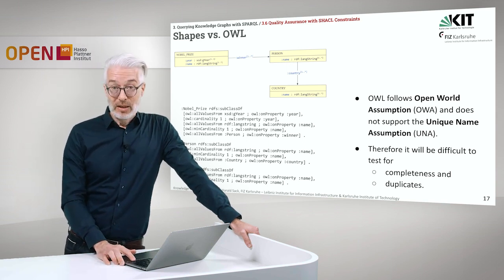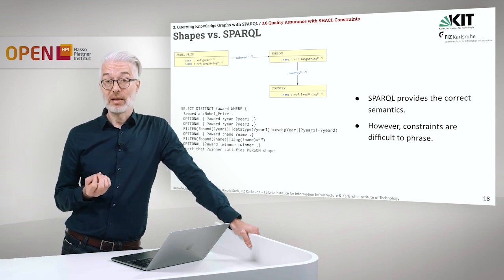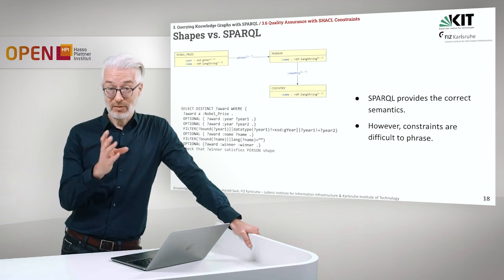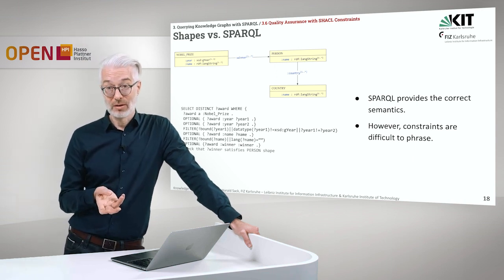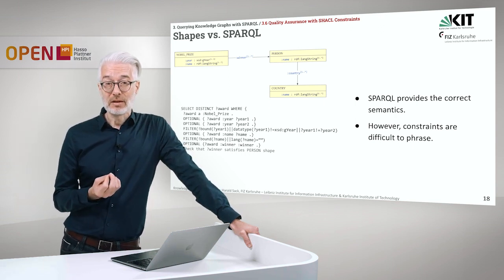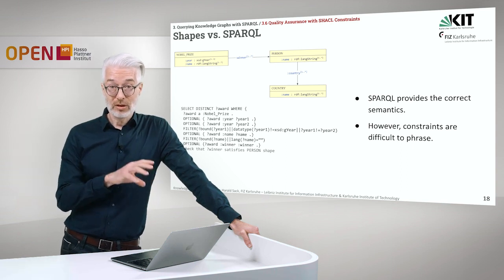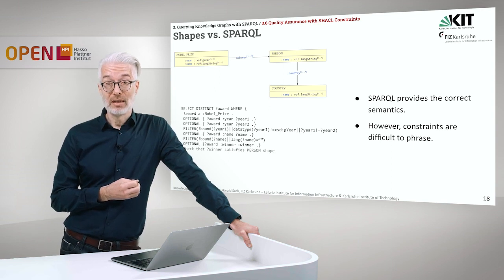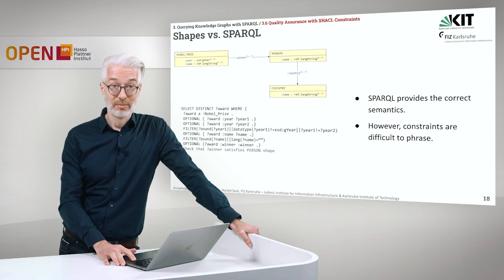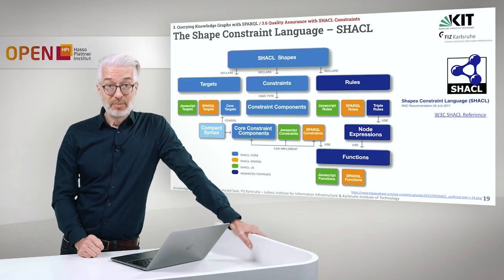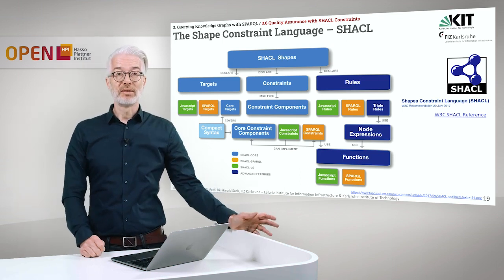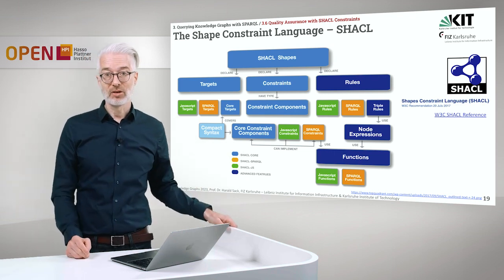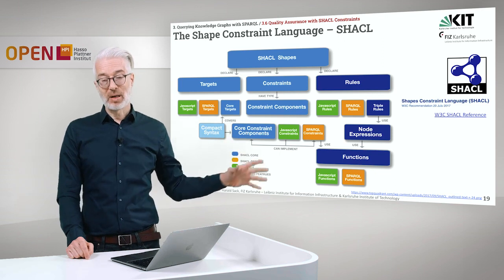Another way to do this is to handcraft a SPARQL query for a specific condition. SPARQL provides the right semantics to find out whether these conditions are fulfilled or not, whether they return a result or not. However, sometimes this is rather difficult to phrase, and you have to do this for all of the targets, which might become rather difficult to test. Therefore, SHACL has been invented — the shape constraint language — which gives you possibilities to define your shapes, declare your constraints, and declare specific rules that these shapes should obey, with SPARQL parts involved.